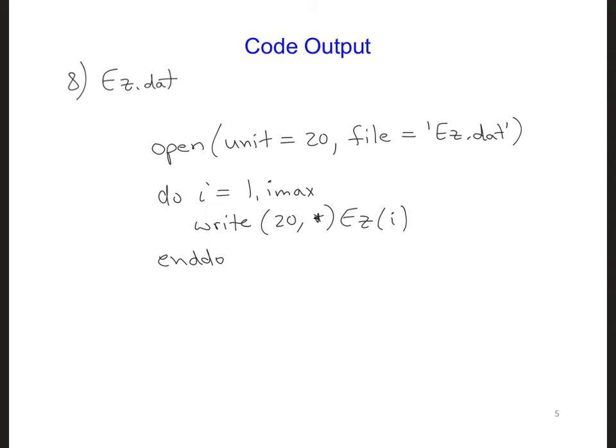When we're done writing all these numbers to that file, we can close it by putting close 20. That's it. Once you close the file, you can reuse the number 20 again for a different file. But while each file is open, it needs to have its own unique file number, otherwise you'll have data going to the wrong files.